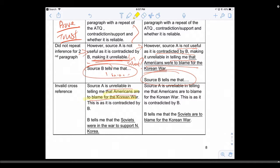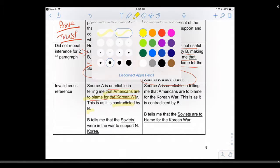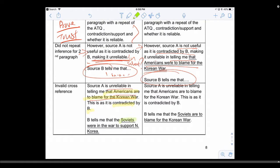Then you say it's contradicted by B, but when you make your contradiction, you say 'The Soviets were in the war to support North Korea,' which is a totally different topic from what you said in A. Your cross-ref is a failed cross-ref - wrong for the whole paragraph.